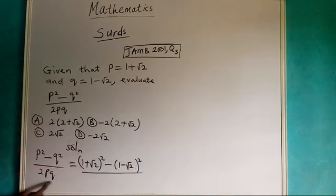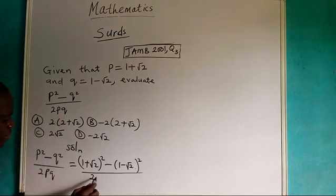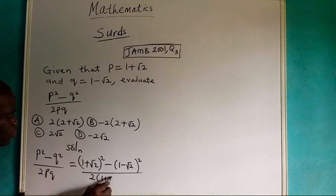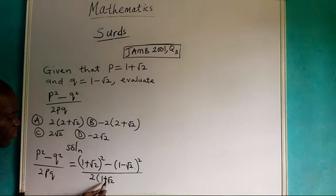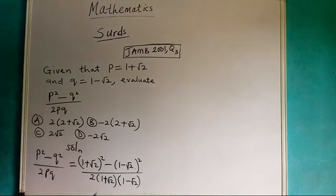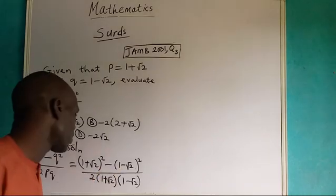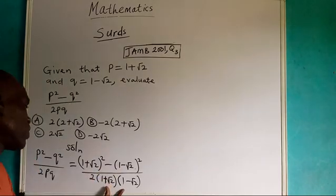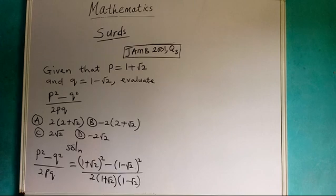It means that we still maintain the same values. For P we have 1 plus root 2, and for Q we still have 1 minus root 2. Now we need to expand this. If anything applies to the denominator, we will also expand.